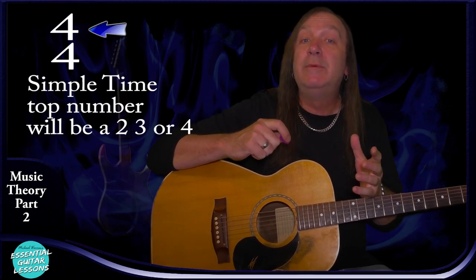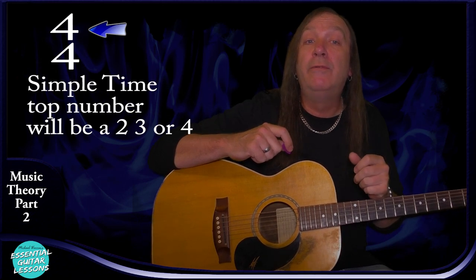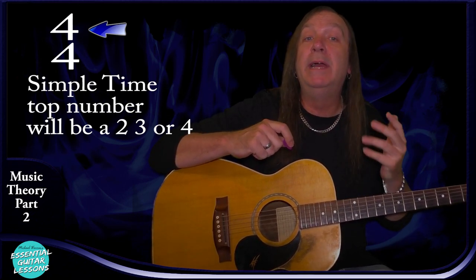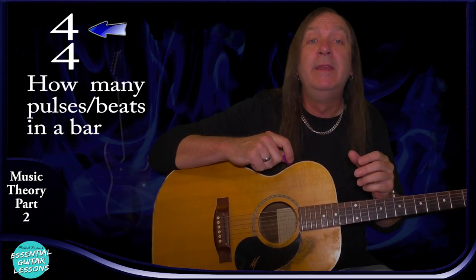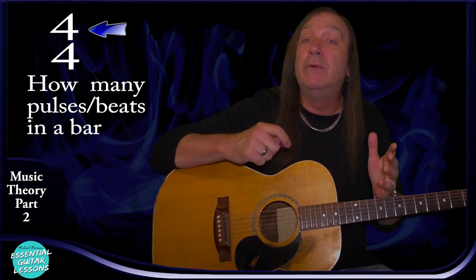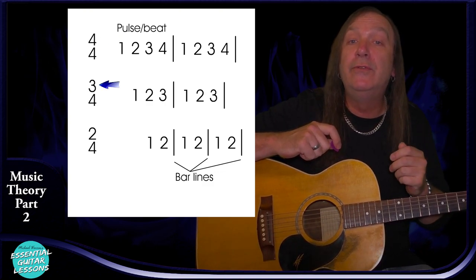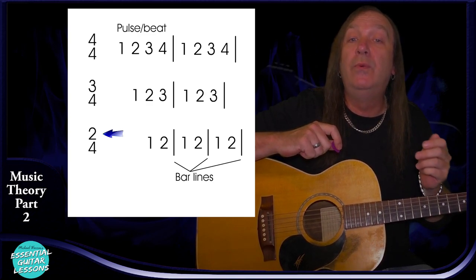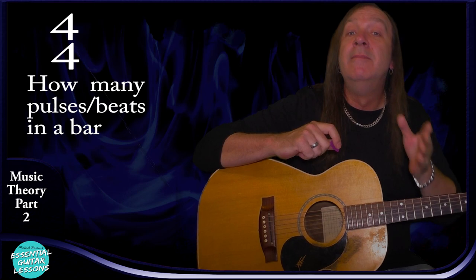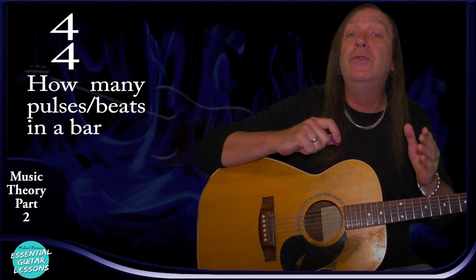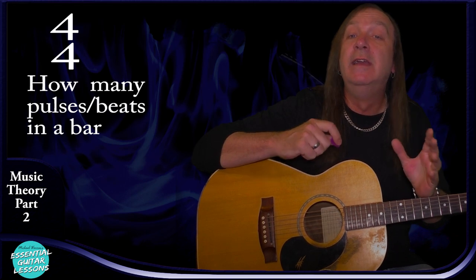Let's start with the top number because that's normally the easiest to understand. With simple time the top number will always be a 2, 3, or 4 — if it's a different number it's no longer simple time. The top number tells us how many pulses or beats there are in a bar, and every bar will have that number of pulses. So if we have a 4 on top we count 1, 2, 3, 4; if it's a 3 on top we count 1, 2, 3; if it's a 2 on top we count 1, 2. We then put a bar line and start again — it's just breaking our pulses up to make them easier to read.